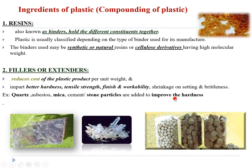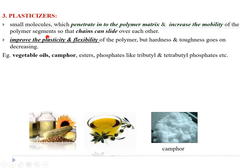Next is plasticizer. From the name itself we know it is going to improve the plasticity of the plastic. These molecules penetrate into the polymer matrix and increase the plasticity and flexibility of the plastic. They increase the mobility of the polymer so that the chains can slide over each other. However, when you increase the plasticity, the hardness and toughness of the plastic decreases. Some plasticizers used are vegetable oils and esters.